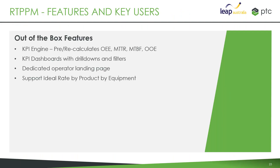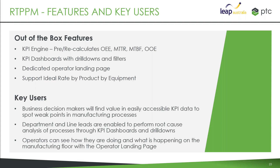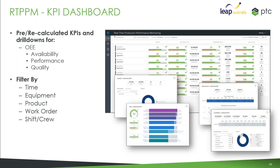Key features include a KPI engine to pre-calculate your Overall Equipment Effectiveness, Mean Time to Repair, Mean Time Between Failure, and Overall Operations Effectiveness. With these dashboards we can drill down to understand what's happening. The key users are the people who need to make business decisions — your department and line leads who need to do root cause analysis, and operators who can see how they're doing through the operator landing page.